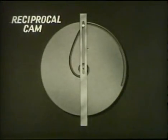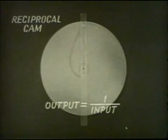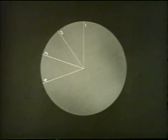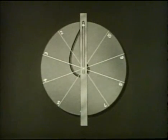In the reciprocal cam, the output is equal to one divided by the input. The working surface is constructed by plotting points on radii. This distance on line one represents one; half this distance on line two represents the reciprocal of two, or one-half; one-third on three, and so on. With this curve cut as a groove in a disc cam and a follower added, the cam output will be the reciprocal of any input.